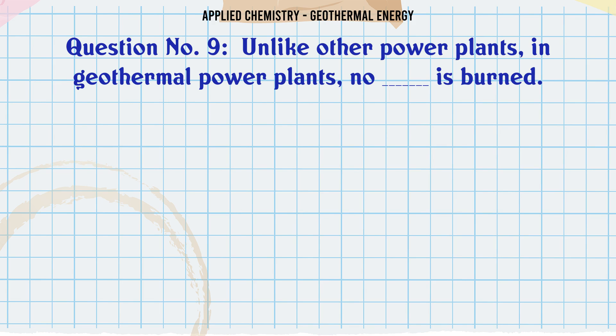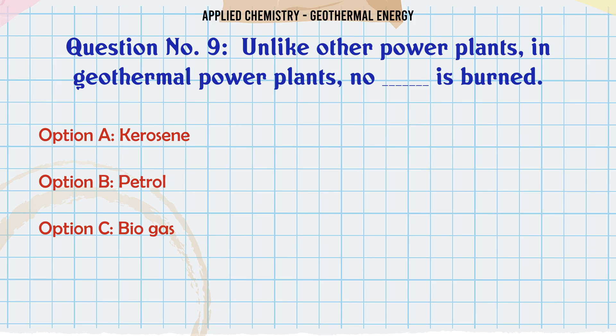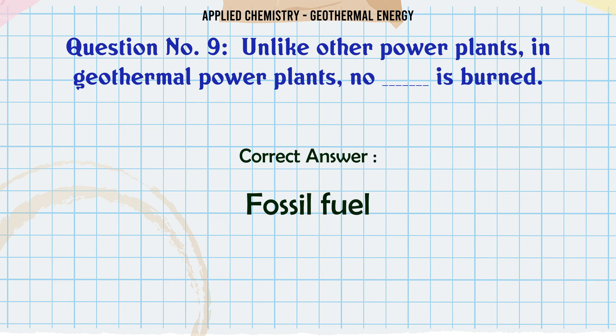Unlike other power plants, in geothermal power plants, nothing is burned: A: Kerosene, B: Petrol, C: Biogas, D: Fossil fuel. The correct answer is fossil fuel.